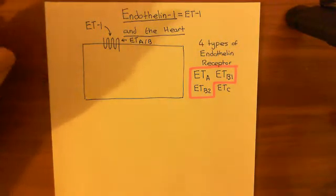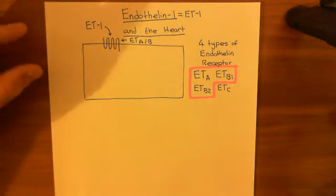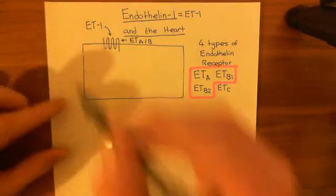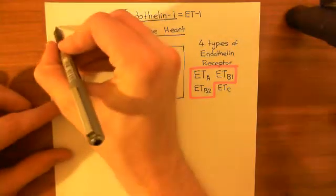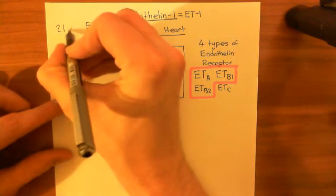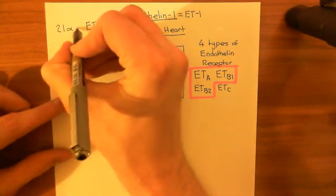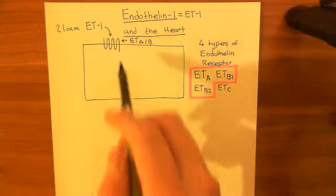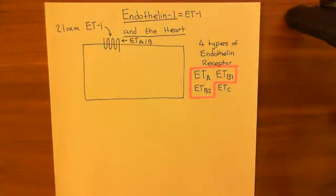Endophyllin 1, and in fact all endophyllins, are actually little polypeptides of around 21 amino acids. So endophyllin 1 is going to come and bind to its endophyllin receptor, which is either of type A, type B1, or type B2.